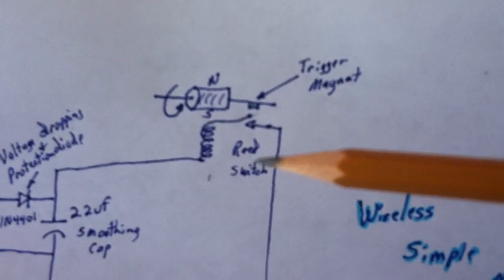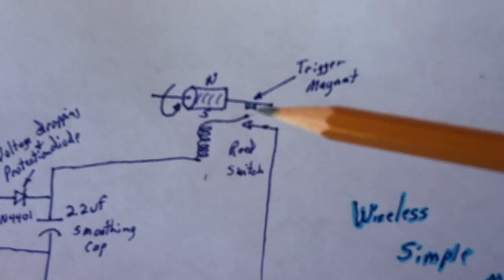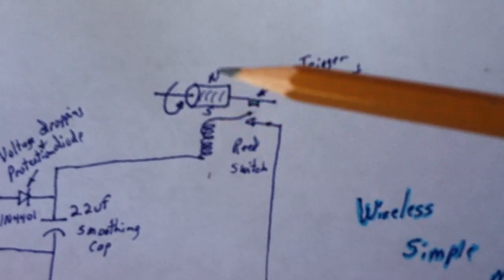This is all the pulse motor is. There's nothing fancy. It's a coil of wire, a reed switch with a trigger magnet stuck to the steel coat hanger shaft on the rotor.